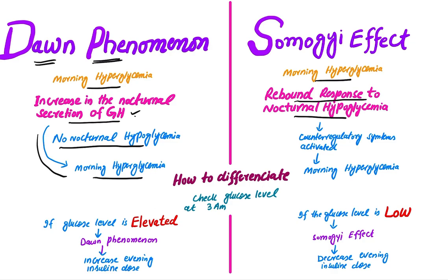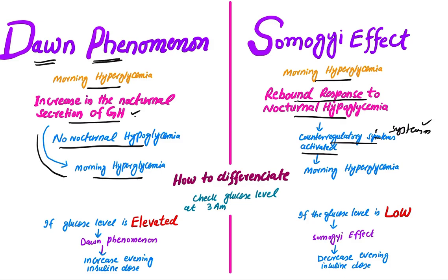In Somogyi Effect, due to nocturnal hypoglycemia, there is a rebound response. Counter-regulatory systems are activated, and when there is nocturnal hypoglycemia, these counter-regulatory systems are activated, resulting in morning hyperglycemia.